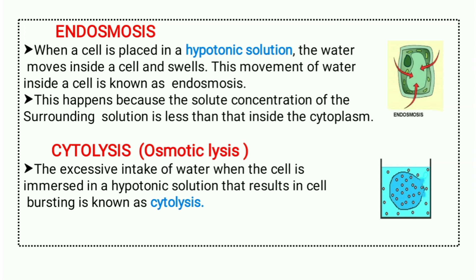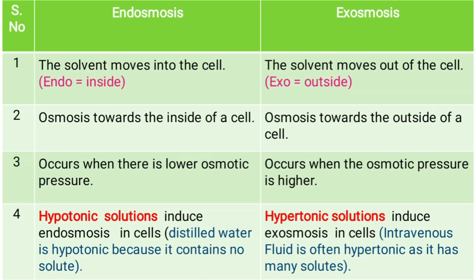This is called endosmosis. Now what is cytolysis? Cytolysis is a similar type of process to endosmosis. What happens here is that an excess amount of water enters the cell, and because of that pressure is exerted on the cell, and due to that pressure the cell bursts or breaks. That process is called cytolysis. Cytolysis is also called osmotic lysis.